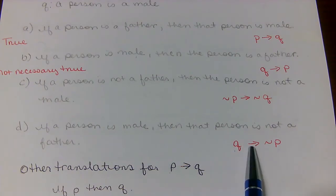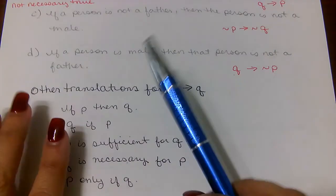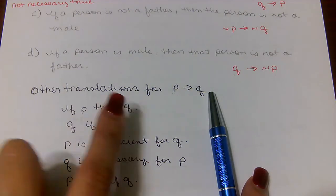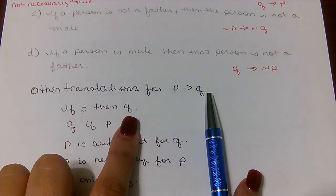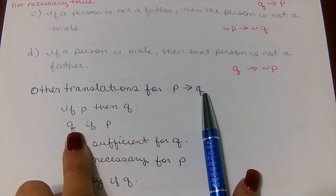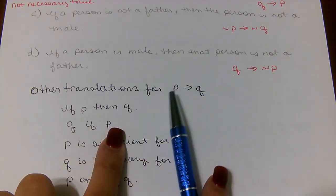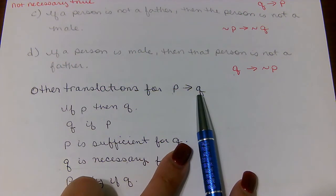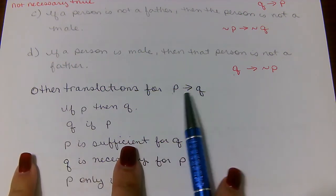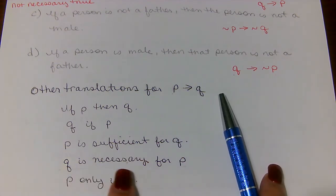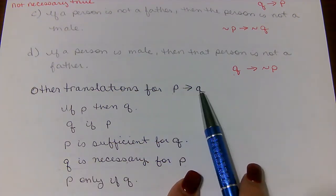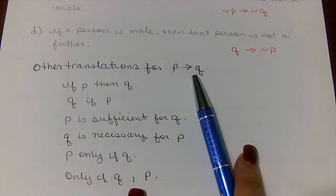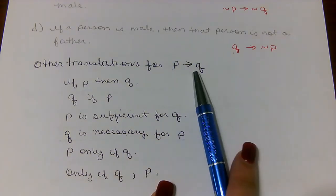For part D: if a person is male — that's Q — then that person is not a father. This 'not' indicates it's the opposite of the P statement, so we have Q → ¬P. Other translations for the if-then statement P → Q include: Q if P; P is sufficient for Q; Q is necessary for P; P only if Q; and only if Q, P.